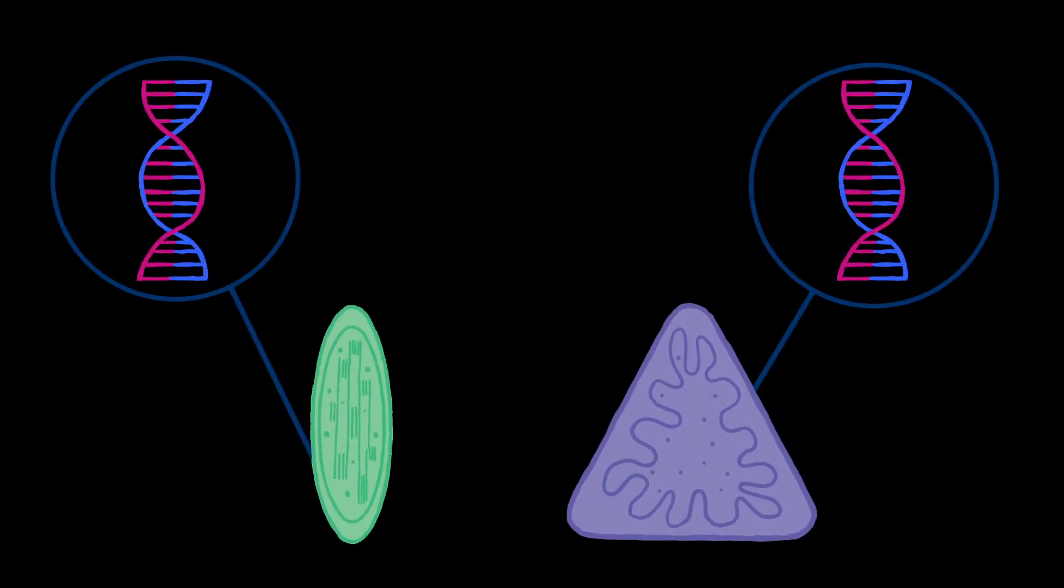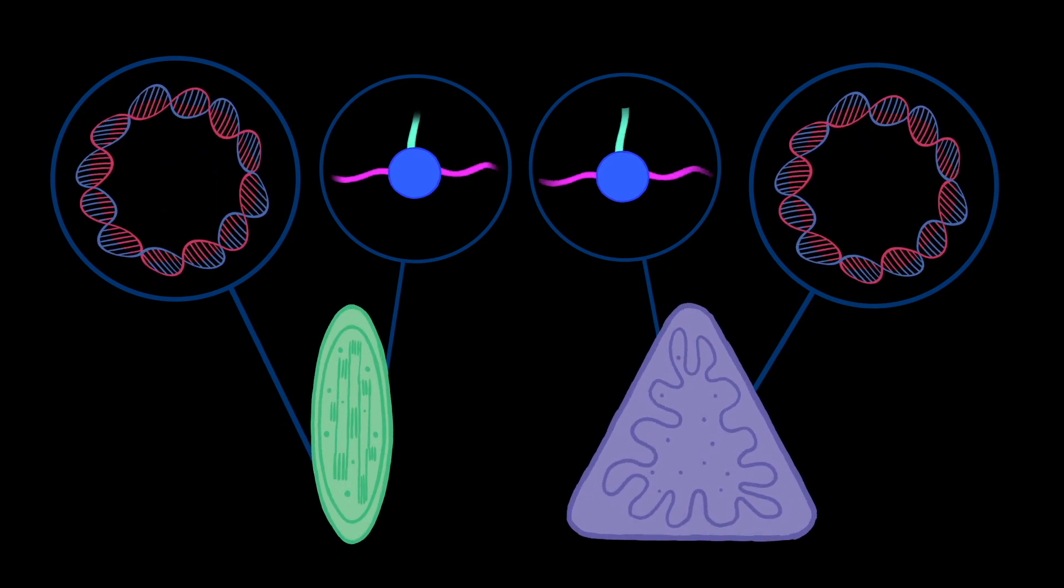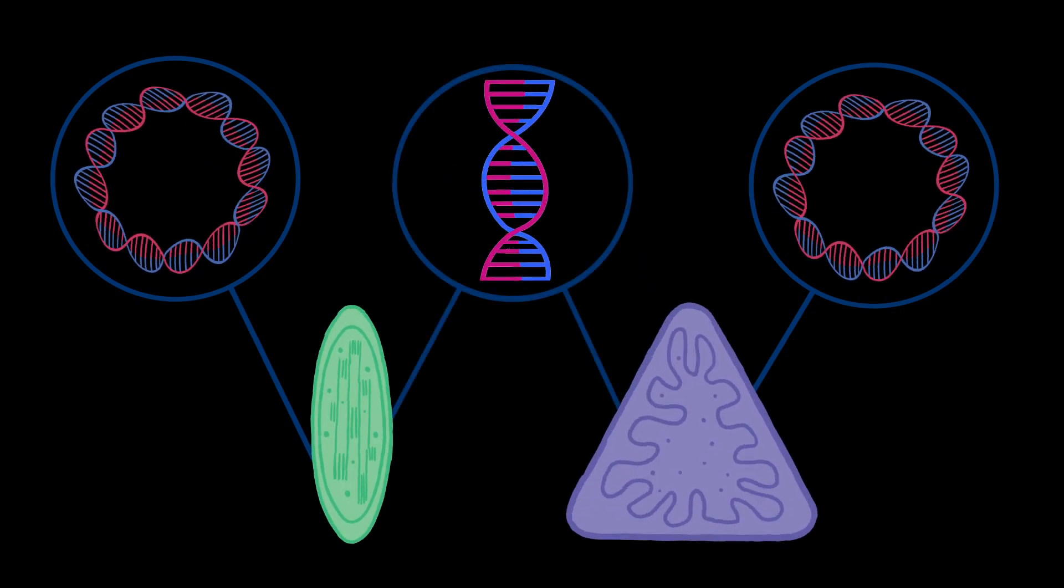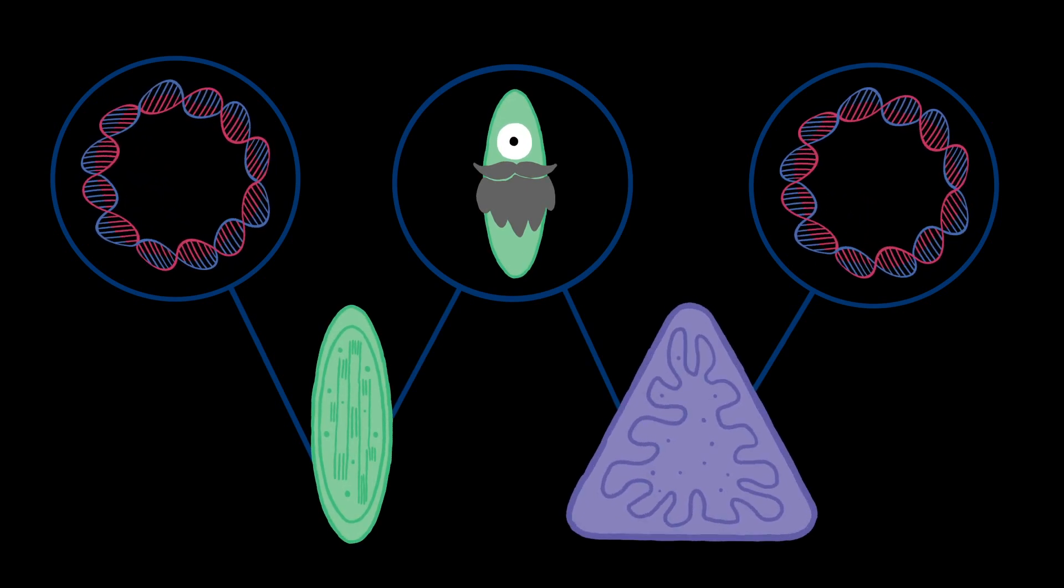Second piece of evidence. Chloroplasts and mitochondria both contain their own DNA and ribosomes. Their DNA has a circular structure that is strikingly similar to the DNA of the ancient bacteria, and it also contains many similar genes.